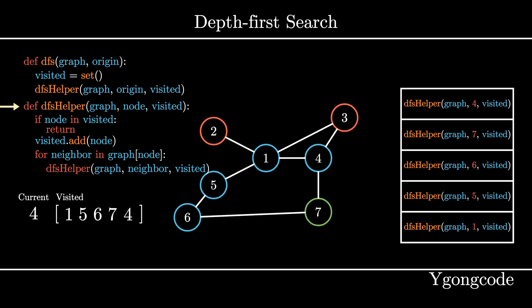At dfsHelper 7, since node 7 has been visited, we return, pop it off the call stack, and go back to dfsHelper 4.